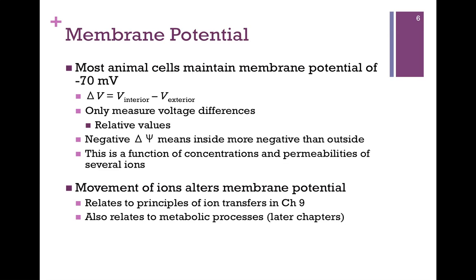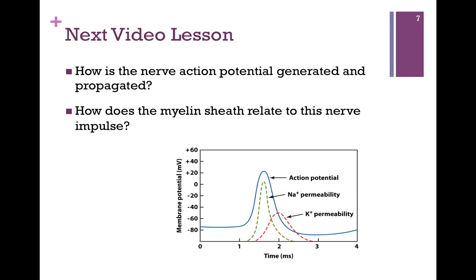The movement of ions alters this membrane potential, which we'll see in the next lesson. This relates to the principles of ion transfers covered in this chapter, and also to metabolic processes we'll consider in later chapters. In the next video lesson, we want to see how the nerve action potential is generated and propagated through the movement of these ions, and we'll see the role that the myelin sheath plays related to that nerve impulse.